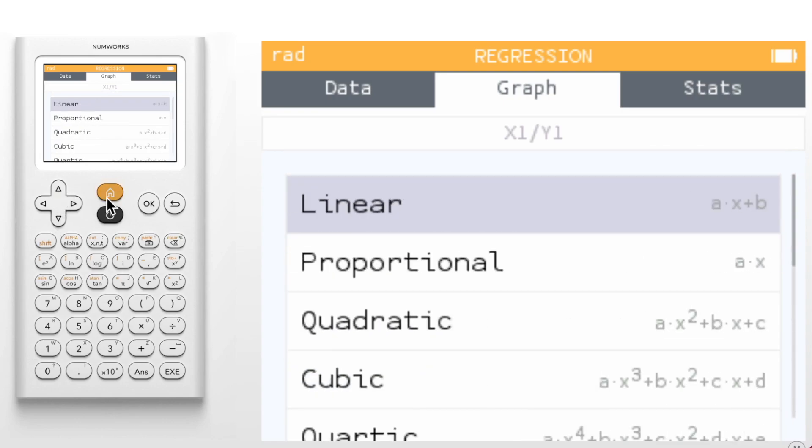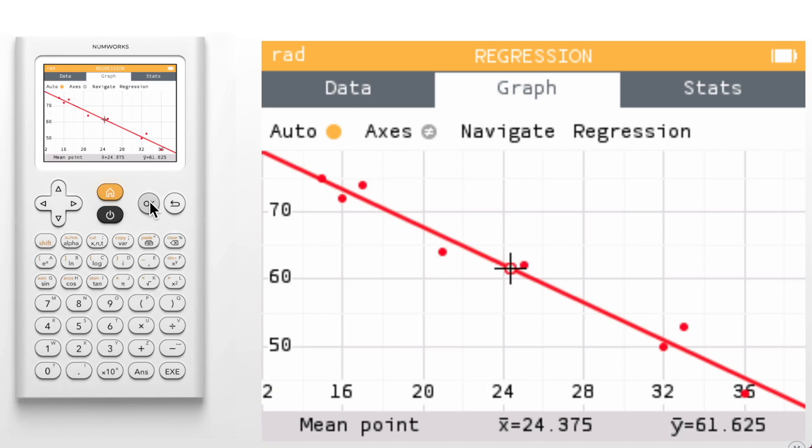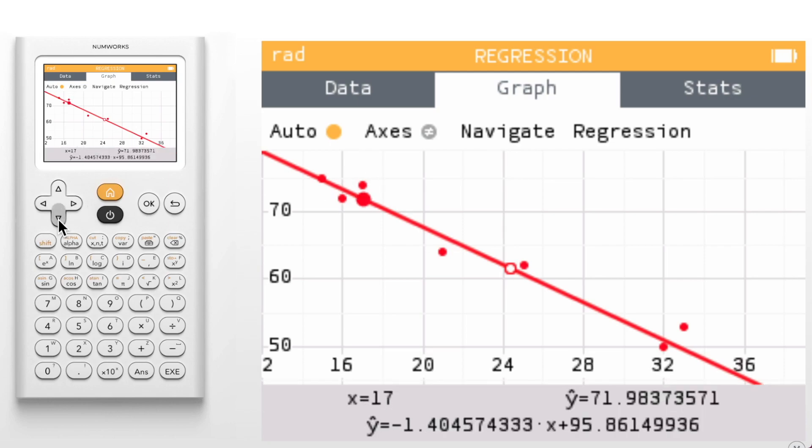Once a model is selected, the regression model will appear on the graph. Now you can navigate through the data points using the left and right arrows and even navigate either up or down to the model to observe the predicted values indicated by Y hat. Once on the model, the equation of the model will also appear. You might notice that the graph legend has been minimized to allow for more space for visualization.